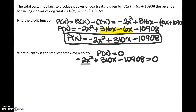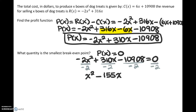We can divide both sides by negative 2, which will make the numbers smaller and easier to factor or use with the quadratic formula. If we divide by negative 2, remember that negative divided by negative is positive, and 0 divided by negative 2 is still 0. So we get a simplified equation with smaller coefficients.